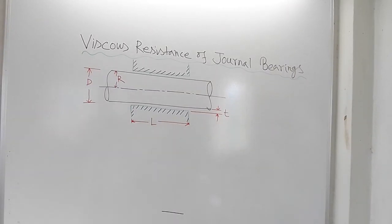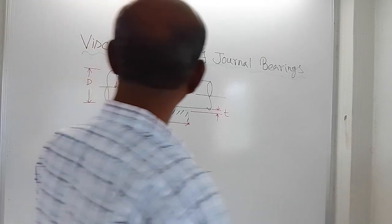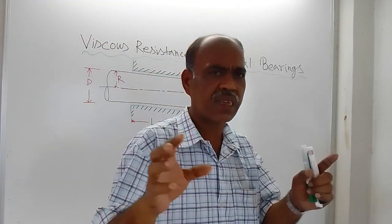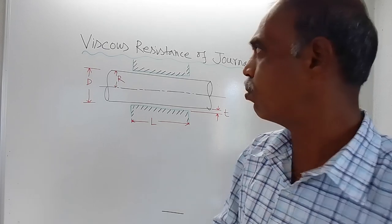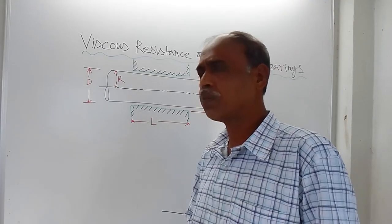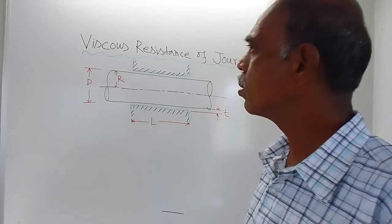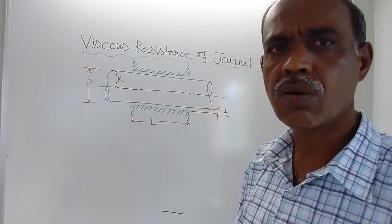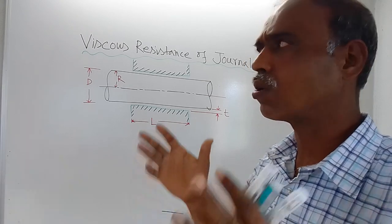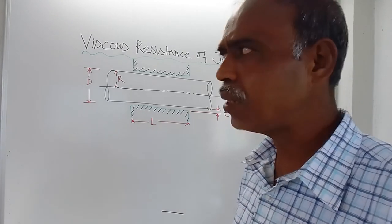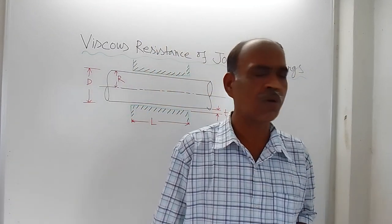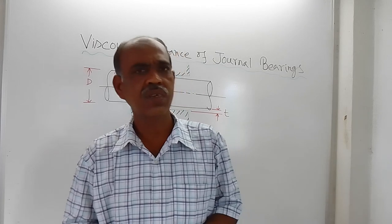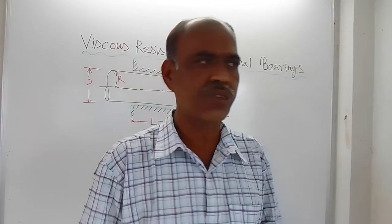Good morning. Here the chapter is again the same — it is viscous flow. Previous to this, viscous flow was discussed for flow through circular pipe and flow between parallel plates, and of course the flow was considered to be laminar in nature.